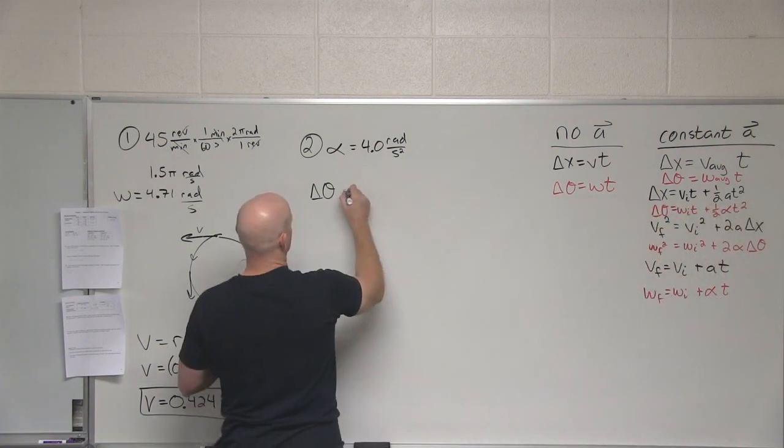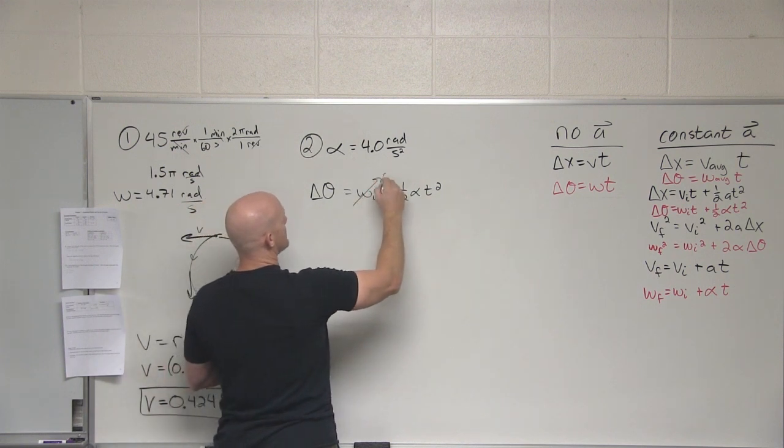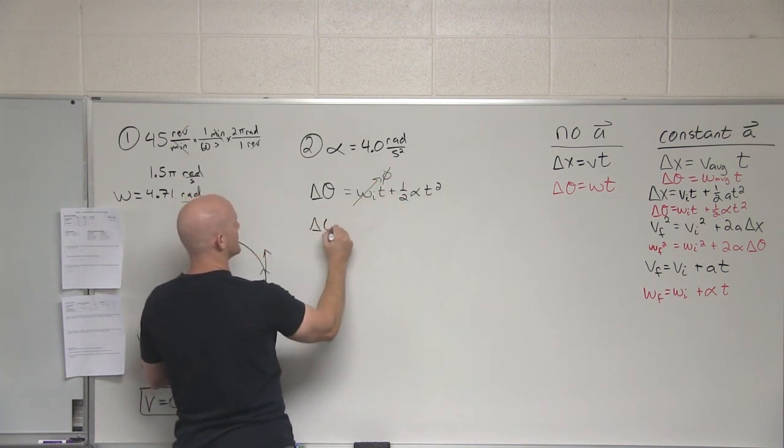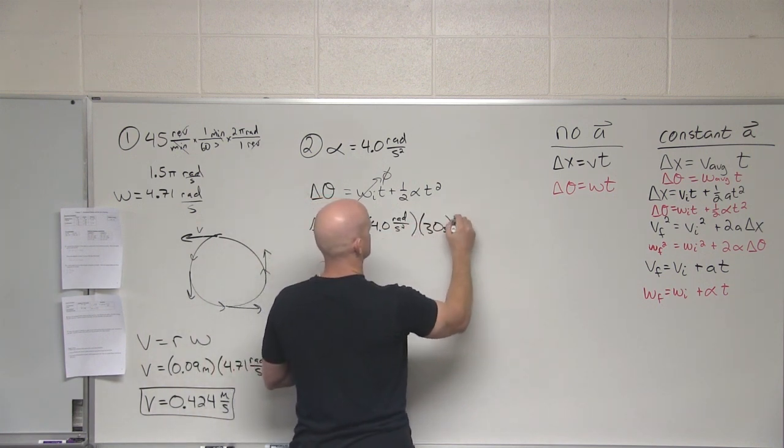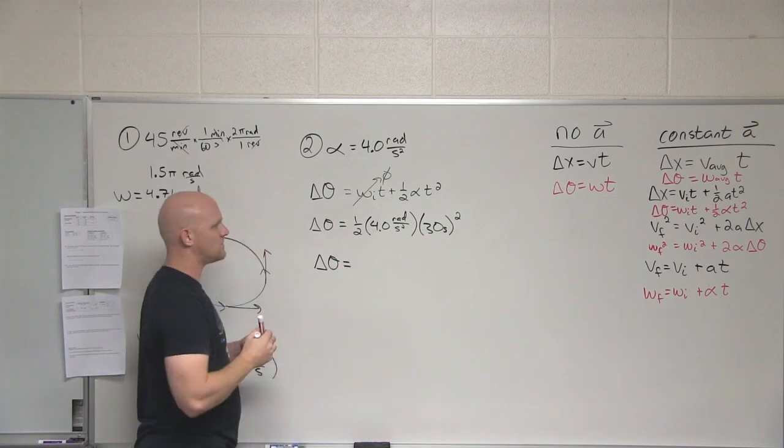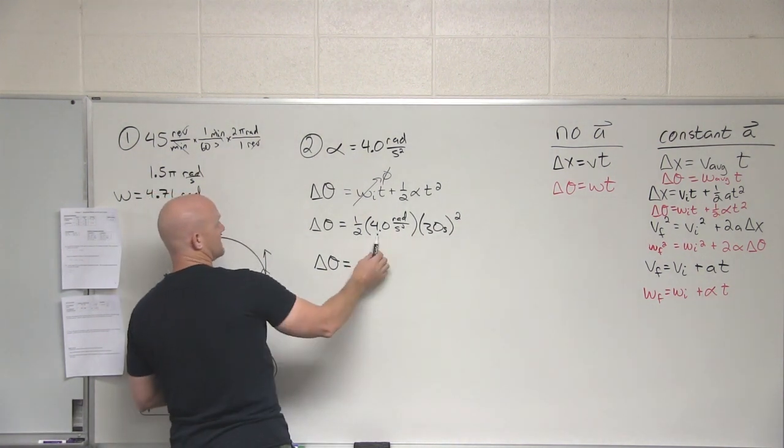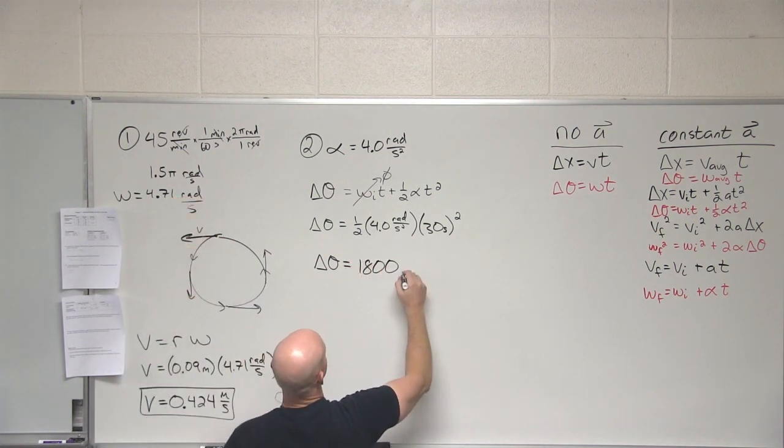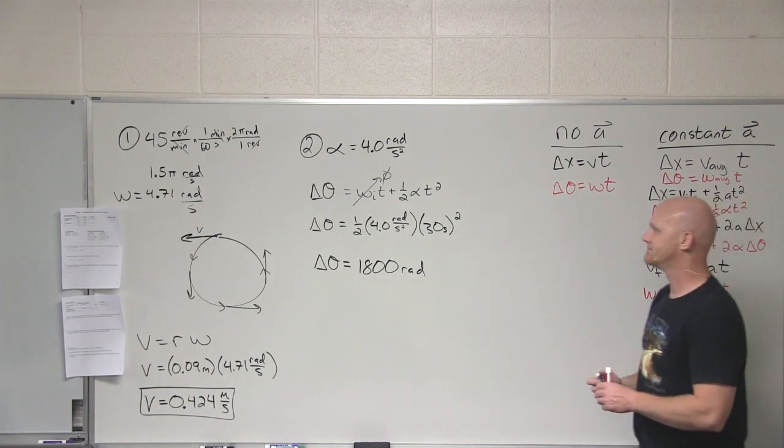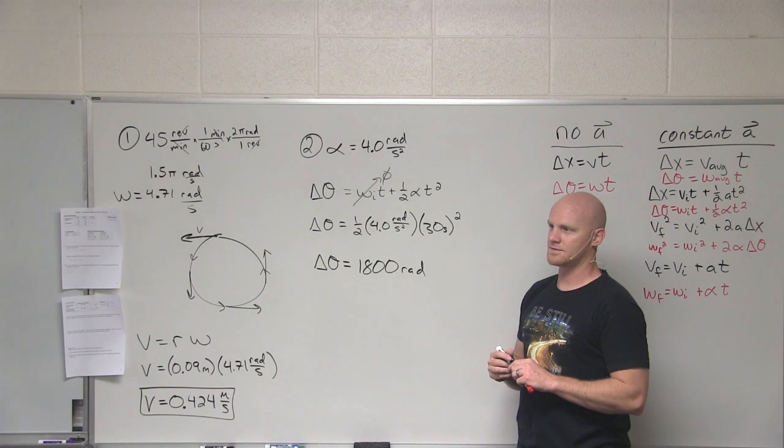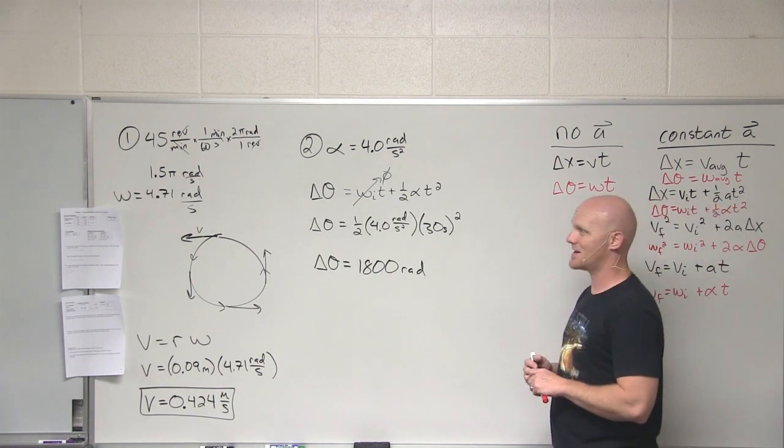In this case, delta theta equals omega initial t plus 1 half alpha t squared. I know the initial velocity is 0. I know alpha, I know t, and in one equation, one calculation, I'll get this. 900 times a half, or actually 450 times 4. Yeah. 1800 radians, the same thing we were going to get before when we did 60 times 30 seconds. Questions? Relate this as much as you can, again, to the linear variables. Make your life a lot easier until this kind of becomes second-hand.